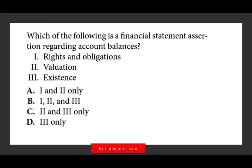Now we also have assertions that deal with account balances. The question is: which of the following is a financial statement assertion regarding account balances? The first one is rights and obligation. When the company presents their financial statements, they're implying that the assets they hold are their assets — they have the right to the assets — and the liabilities they are showing are their liabilities. This is an assertion that deals with account balances, since we're dealing with assets and liabilities. Therefore, one is in, and we can eliminate C and D.